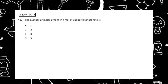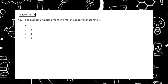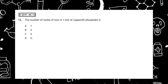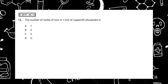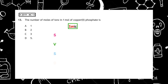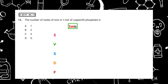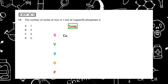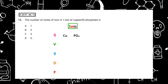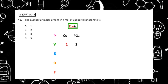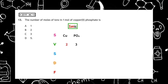This past paper question is from the Higher 2019 multiple choice question 13: the number of moles of ions in 1 mole of copper(II) phosphate is? We first have to work out the ionic formula using SVSDF. The symbol for copper is Cu, the symbol for phosphate is PO₄. The valence of copper is given in the question as 2, and we use page 8 to find the valence of phosphate, which is 3.